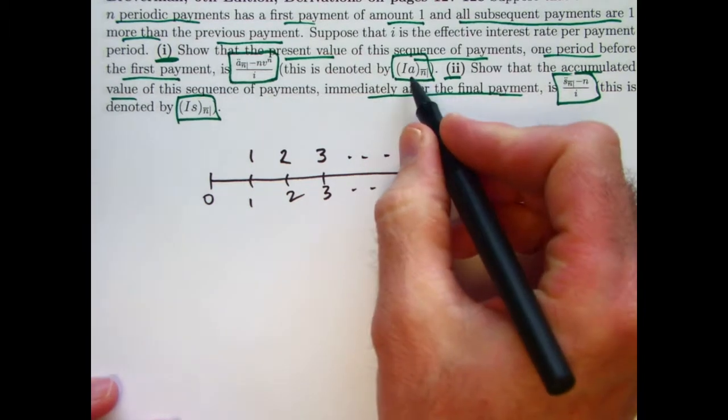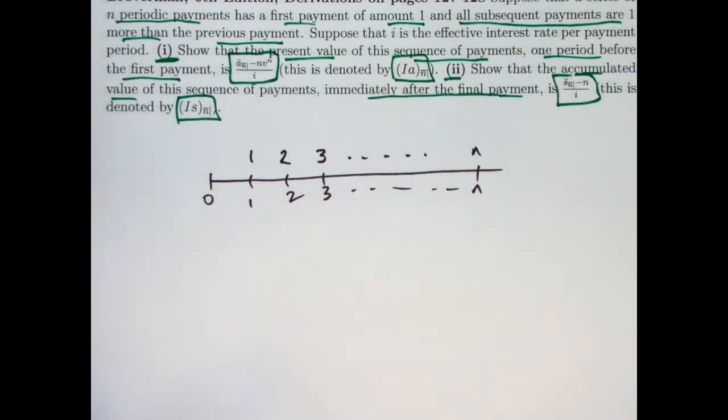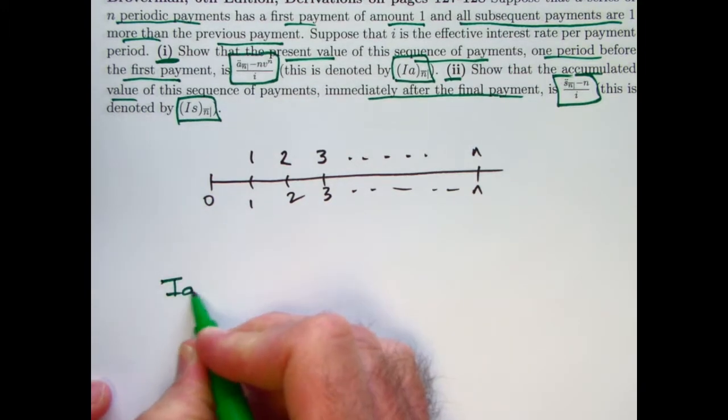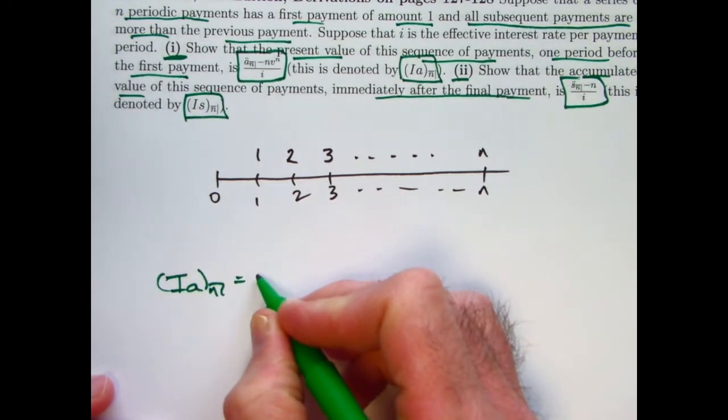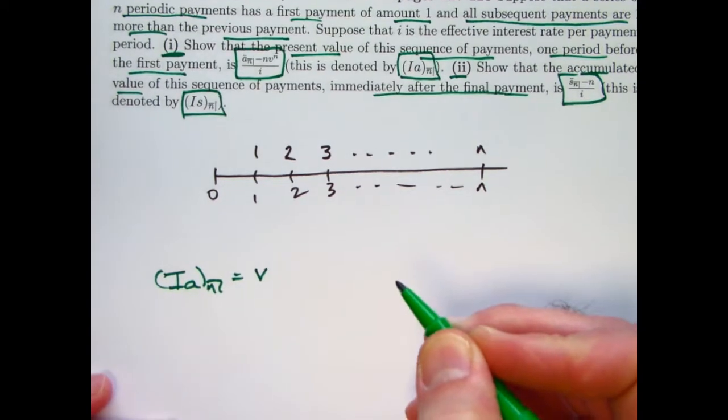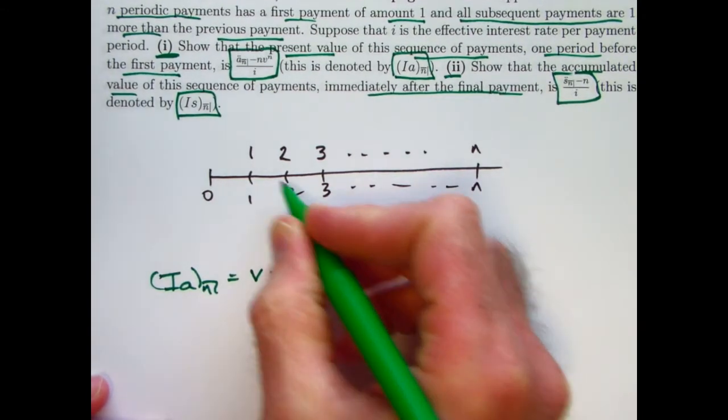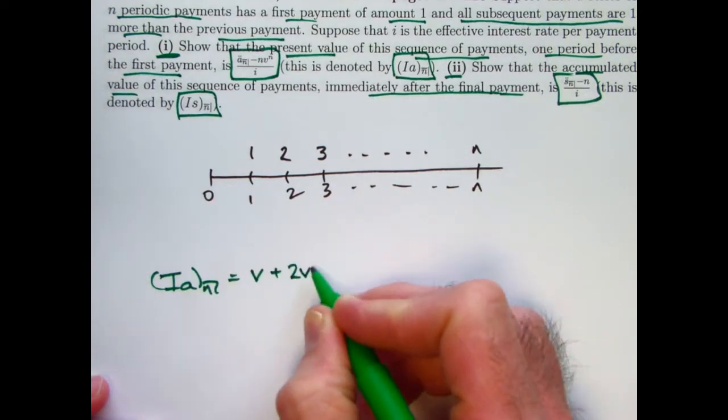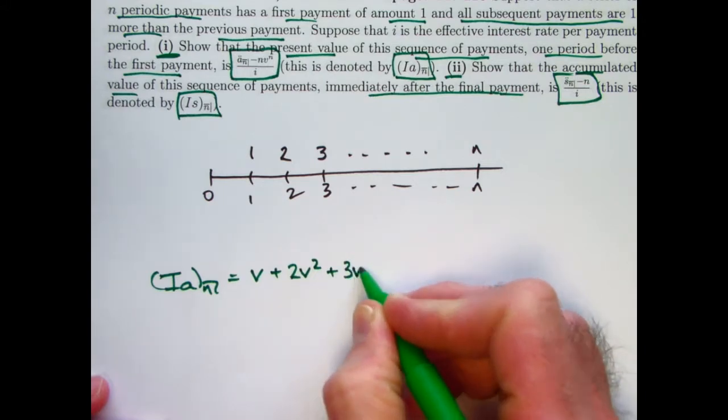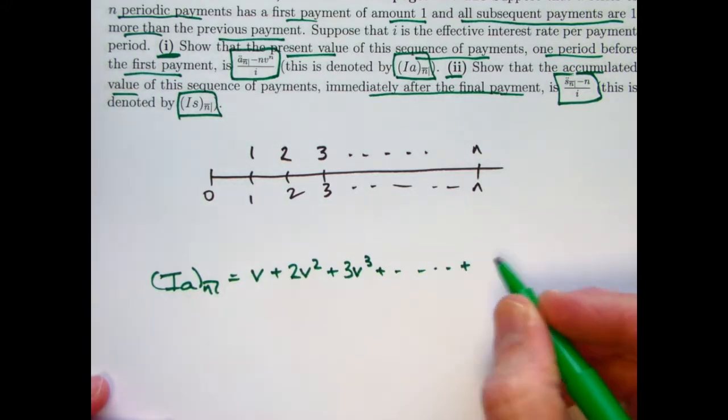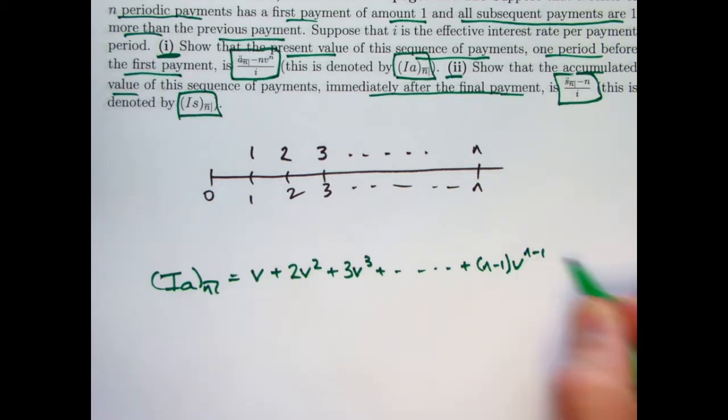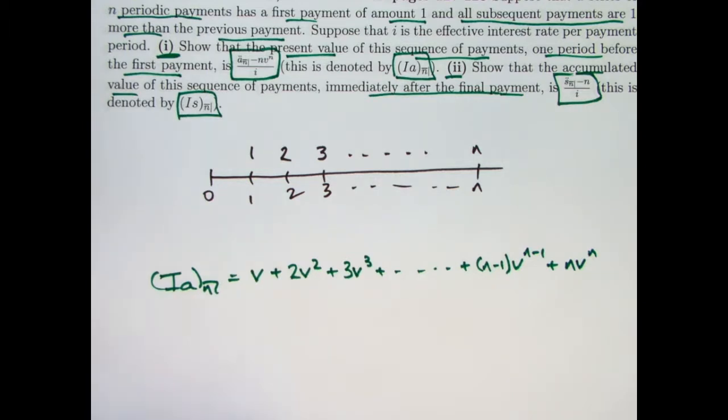We have a payment of 2 at time 2, a payment of 3 at time 3, etc., a payment of n at time n. So again, this symbol here, (Ia)_n, is the symbol for the present value of this annuity. So I can say (Ia)_n as a series would be: take the 1 and discount it back by 1 period, so its present value is v, where again v is the reciprocal of 1 plus i. Take the 2 and discount it backwards by 2 periods, its present value is 2v squared. The 3 gets discounted by 3 periods, its present value is 3v cubed, etc.